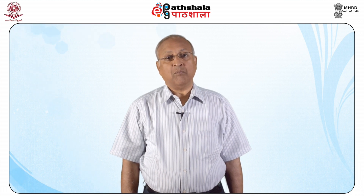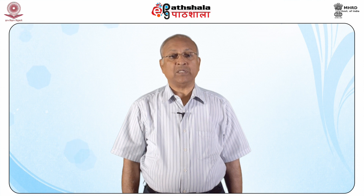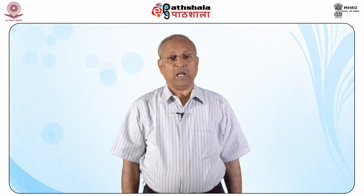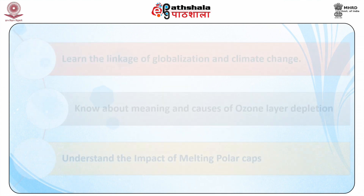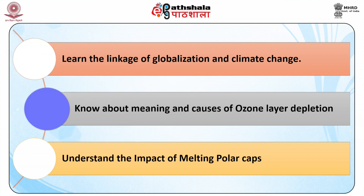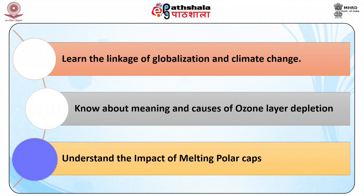Climate change, stratospheric ozone depletion, and biodiversity loss are planetary problems that require global cooperation and management. Globalization in the context of the environment means global concerns about the environment. After studying this module, you should be able to learn the linkage between globalization and climate change, know about the meaning and causes of ozone layer depletion, and understand the impact of melting polar caps, amongst other things.